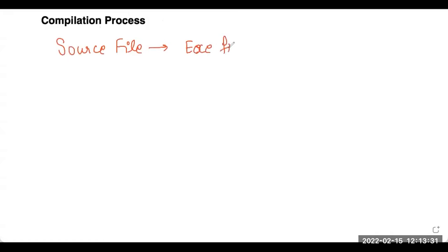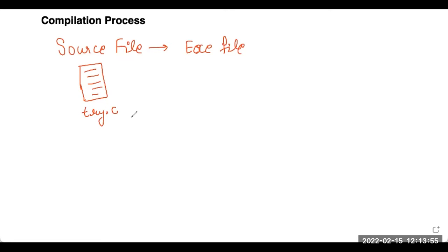Let's begin with the basic definition of the compilation process. A compilation process is the process of converting your C source file into a running executable file. You write some set of instructions in any text editor or IDE. Let's say the name of the source file is try.c. Make sure you end the extension of your source file with .c — do not save it as try.txt.